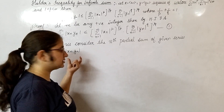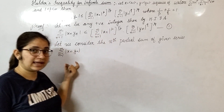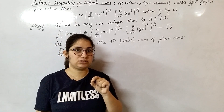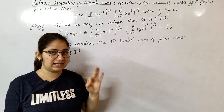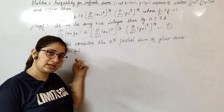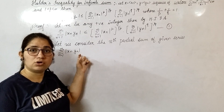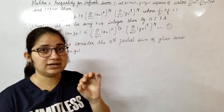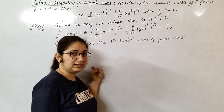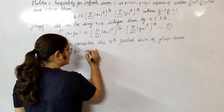Now we consider the nth partial sum of the series: S_n = sum of |x_n y_n| from n=1 to N. Since the modulus of each term is never less than zero, this partial sum is monotonically increasing and bounded. A monotonically increasing and bounded series must be convergent. Therefore, this nth partial sum is convergent.